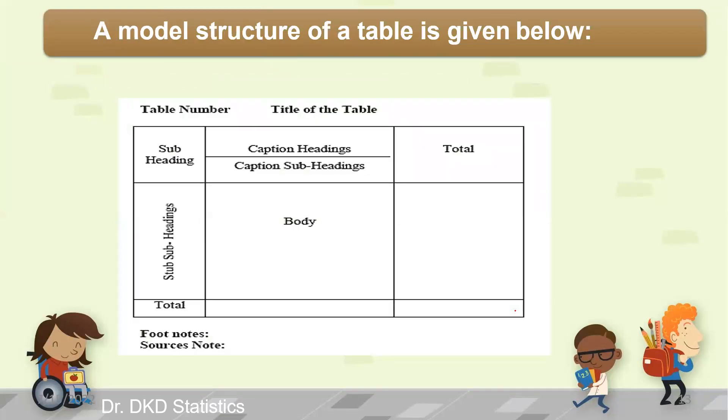This is the structure of the model table. When we are preparing tables, we need to write the table number, the title of the table, the subheadings, captions of the headings, and the body of the table - what kind of values or data we need to put here. Then column totals and row totals we need to write in the tables, and footnotes and source notes are important.